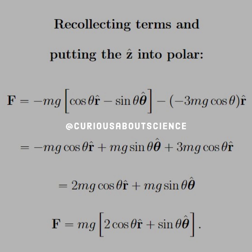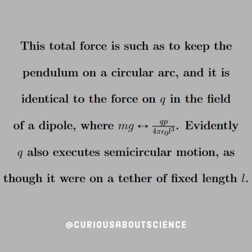This should leave you with a familiar-looking expression in terms of cosine R-hat and sine theta-hat. This total force is such as to keep the pendulum on a circular arc, and it is identical to the force on Q in the field of a dipole, where Mg is analogous to Qp over 4 pi epsilon-naught L cubed. Evidently, Q also executes semicircular motion, as it were on a tether of fixed length L.